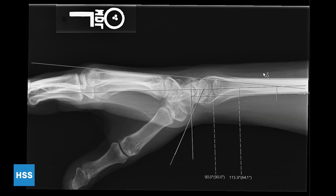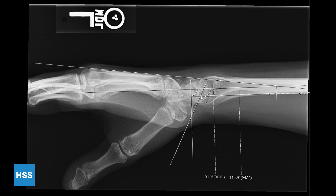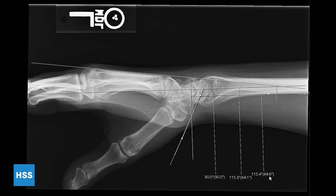Next, measure the angle between the axis of the lunate and the long axis of the scaphoid. This will give you the scapholunate angle, and in this case, it is measured at 64.6.